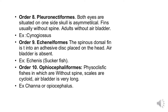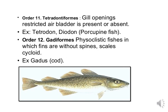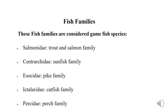Order 10 is Zeiformes: physoclistous fishes in which fins are without spines, scales are cycloid, and the air bladder may be very elongated. Order 11 is Tetraodontiformes: gill opening is restricted and air bladder is present or absent. Examples are Tetraodon, Diodon, and porcupine fishes. Order 12 is Gadiformes: physoclistous fishes in which fins are without spines, scales are cycloid. An example is Gadus (cod). You can see it in the picture.